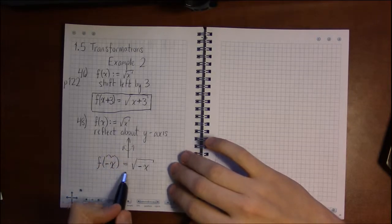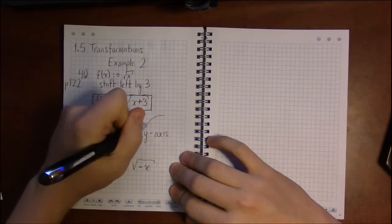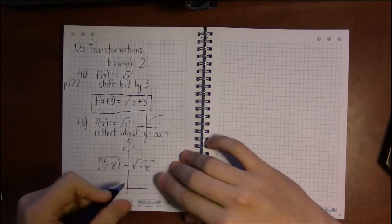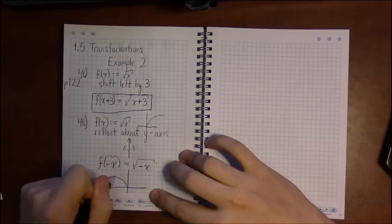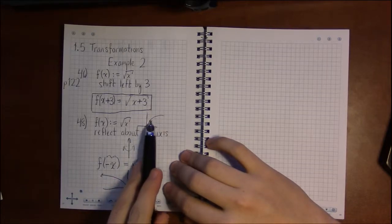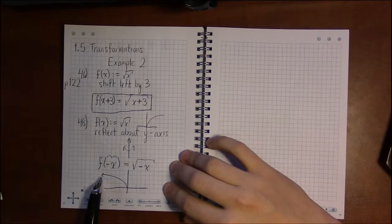This is going to be reflecting the graph of square root of x, which looks about something like this. This is going to have the general shape of like this, which is taking this shape of square root of x and flipping it over the y-axis.